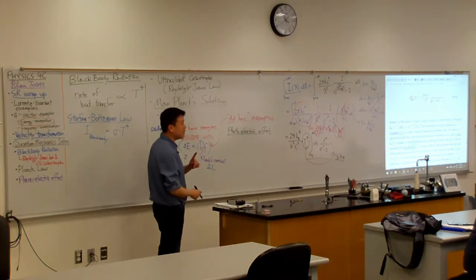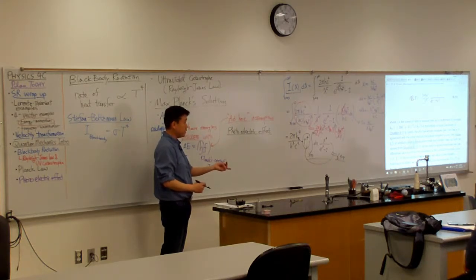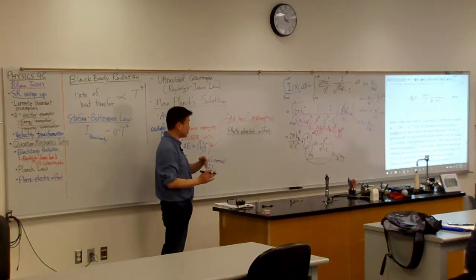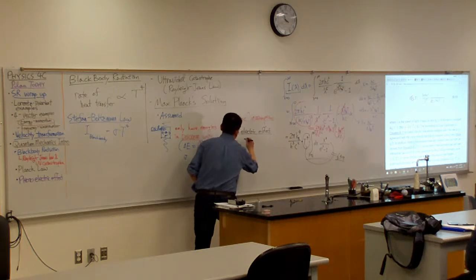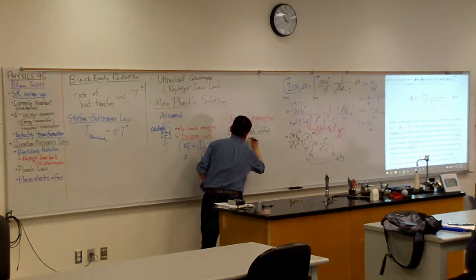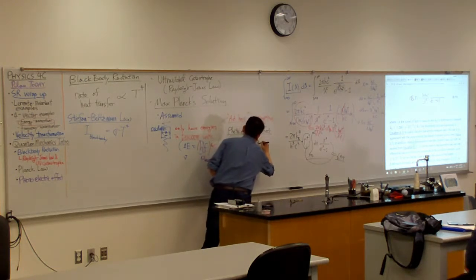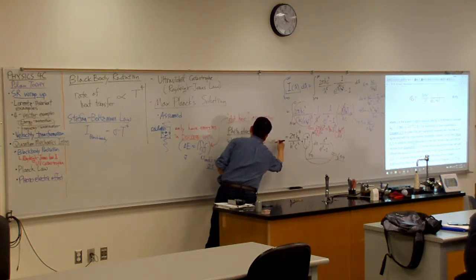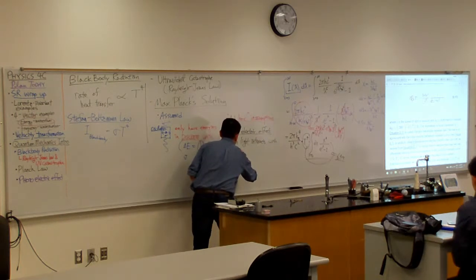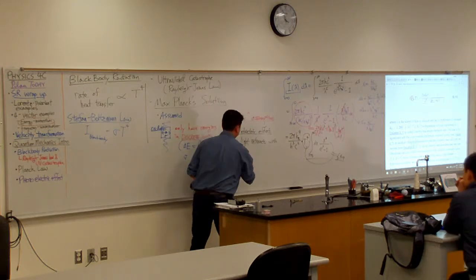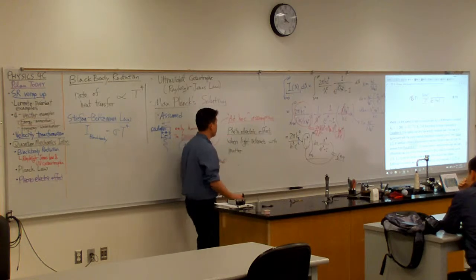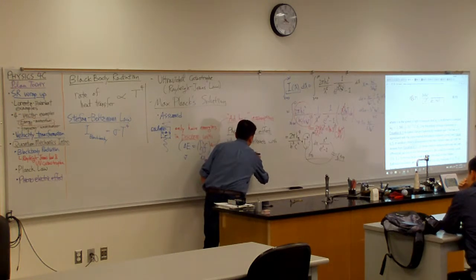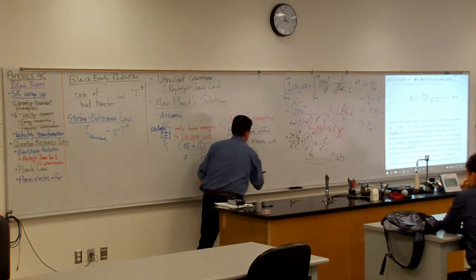When electromagnetic radiation exchanges energy with any other object—when light interacts with matter—the amount of energy that the light can transfer is limited this way. The amount of energy exchanged can only come in units of this.